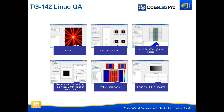The Linac QA components we have in DoseLab are Starshots, Winston-Lutz tests, MLC stroke tests, the picket fence test, flatness and symmetry — which includes full field size and light radiation field coincidence — VMAT routine QA, and edge-on PDD exposures. What's nice about these is that they're all fully automatic. Except Starshots, you have to click twice there; everything else is basically zero click. You load the image, click go, and it gives you your results, tells you if anything failed your tolerances, and then allows you to save a report to the database extremely quickly.